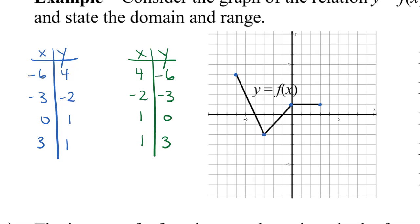I'm going to plot these on the same grid so that we can really see the relationship. Then I'm going to connect my four points. It's really important that you connect them in the same order that you label them in the table — students sometimes connect them in any way, but it's important to connect them in the same order as listed.